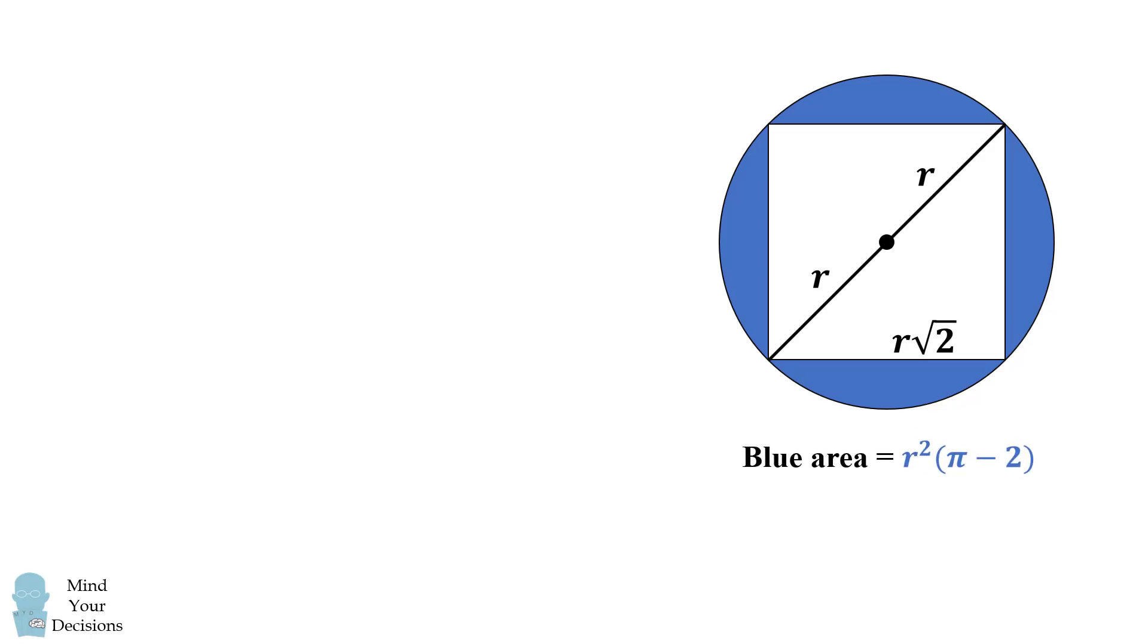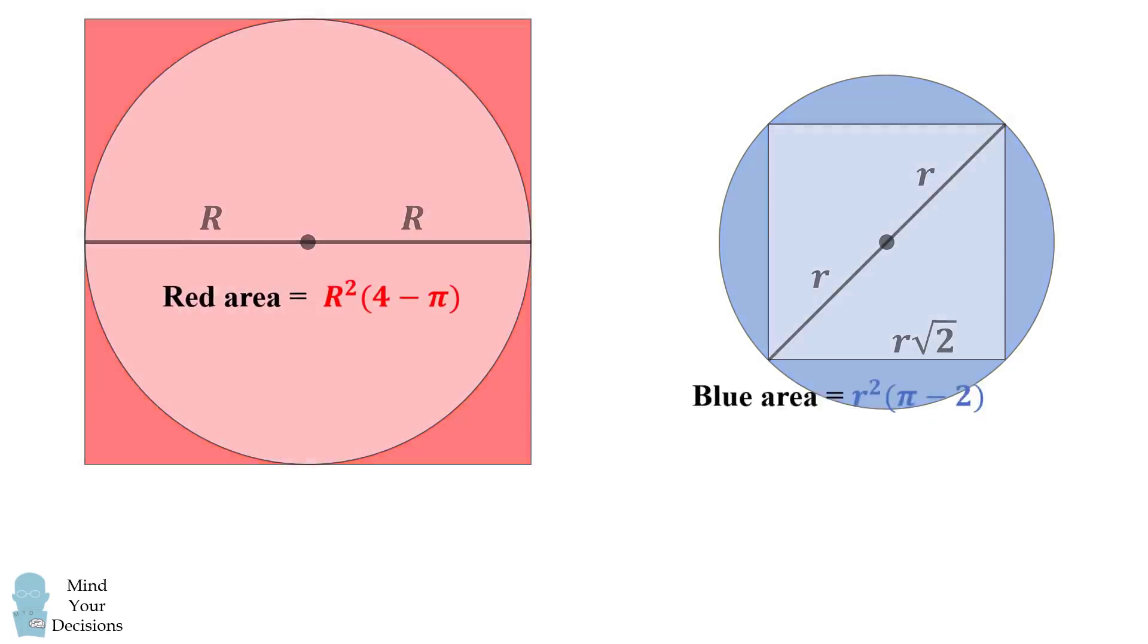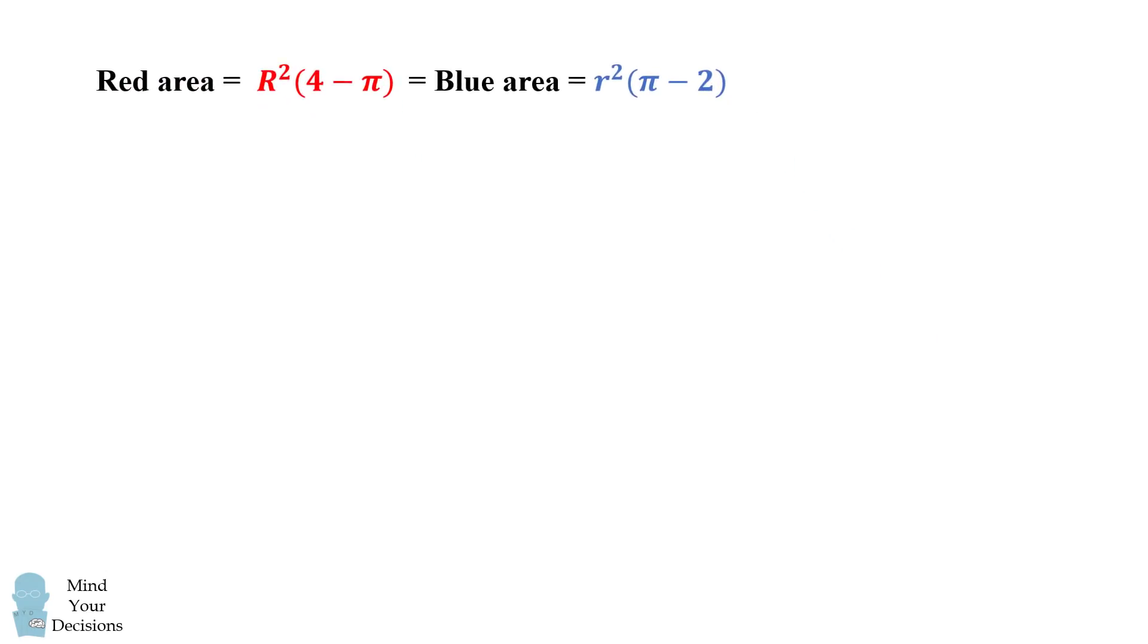We now know the blue area and the red area, so we set these two areas equal to each other. We then take this equation and divide both sides by pi minus 4 and little r squared. This gives us the ratio of the radii squared.